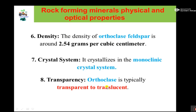Another physical property is transparency. Most of the time, orthoclase is transparent to translucent. This depends on the light and the impurity present in the orthoclase mineral. It ranges between transparent and translucent depending on impurity content.